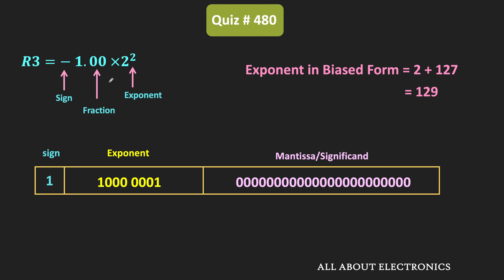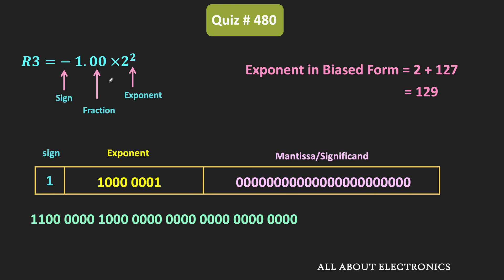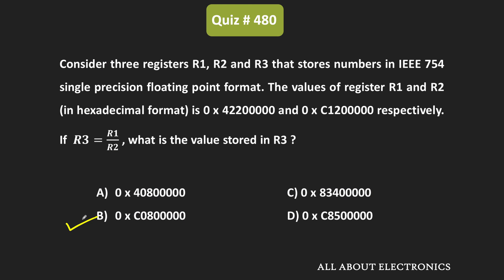This is the 32-bit number corresponding to R3. Since we need to find the equivalent hexadecimal value, let us group bits into groups of 4. The first group is 1100, the next group is 0000, then 1000, followed by five zeros and remaining zero groups. The group 1100 corresponds to C in hexadecimal, 0000 corresponds to 0, and 1000 corresponds to 8, followed by all zeros. The equivalent hexadecimal value stored in register R3 is equal to C0800000, and therefore option B is the correct answer.